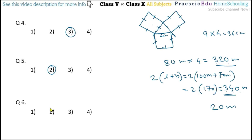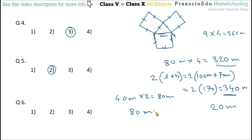Question number 6: the perimeter of the garden is 40 meters. A double fencing of wire has to be put around the garden. What will be the cost of the wire at the rate of 7 rupees per meter? Since it is double fencing, we multiply by 2: 40 × 2 = 80 meters total wire. Cost = 80 × 7 = 560 rupees. This is given in option number 2.